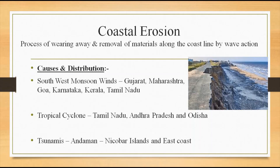The second cause is tropical cyclones, which are common in the eastern coastal region. Most of the destruction occurs during the northeast monsoon season - southwest monsoon hits the western coastal region, while during the northeast monsoon season, tropical cyclones hit the eastern coastal region. In the Bay of Bengal, serious erosion occurs along the east coast including Tamil Nadu, Andhra Pradesh, Odisha, etc.